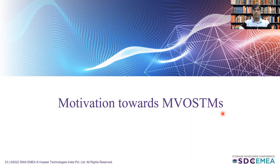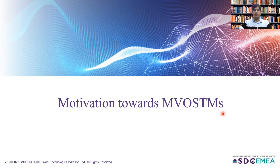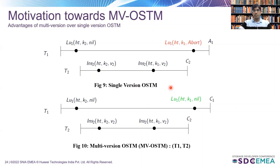Now let's talk about the motivations towards multi-version object-based schemes. Here we will see how we overcome the limitations of single-version object-based schemes with the help of multiple versions. This is the same example from the limitations of object-based schemes where we were not able to accept transaction T1. But in the case of multi-version object-based schemes, by maintaining multiple versions corresponding to each data item, the second operation of T1 can read or return the older value. Eventually, this transaction returns committed, and we are able to accept both transactions. From now onward, Shweta will explain the detailed design and data structures of our proposed algorithm.